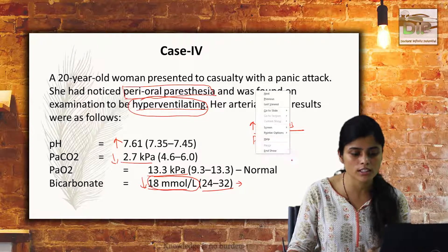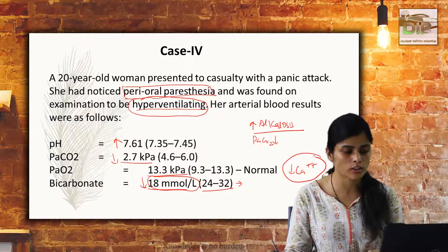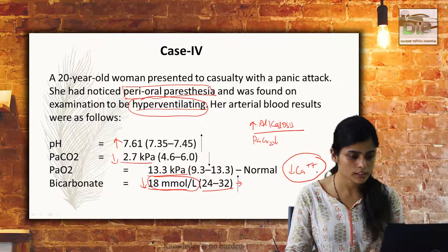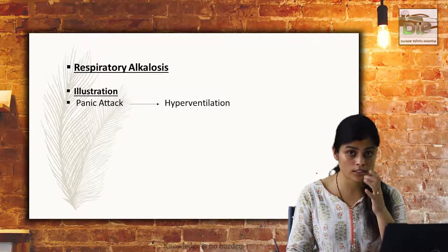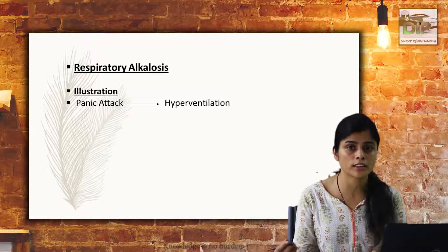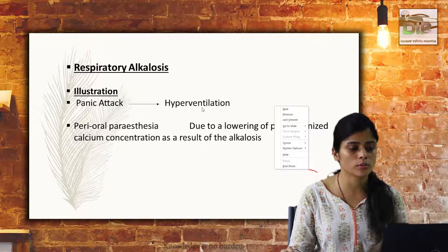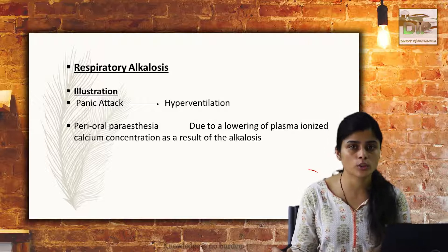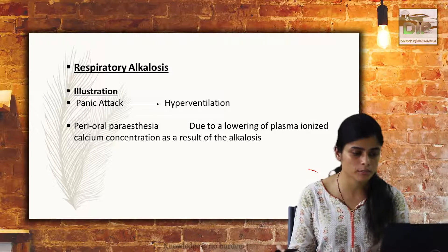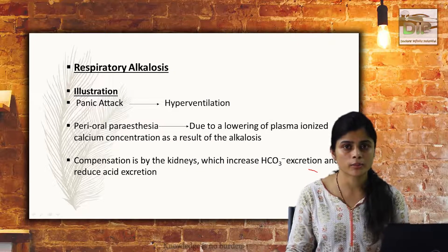The important finding here is perioral paresthesia. This is mainly because alkalosis causes a decrease in your ionized calcium, which can cause tetany-like symptoms or perioral paresthesia. Respiratory alkalosis is caused by panic attack causing hyperventilation, which causes more and more washing out of CO2, leading to decreased proton accumulation and increased pH. Compensation is by the kidney, causing increased bicarbonate excretion and decreased reabsorption.